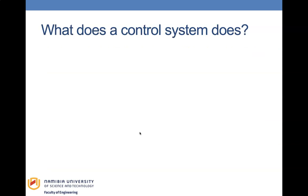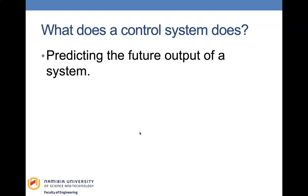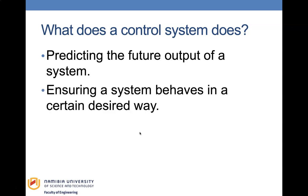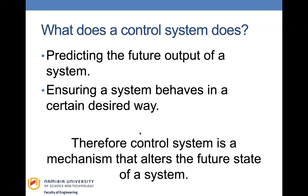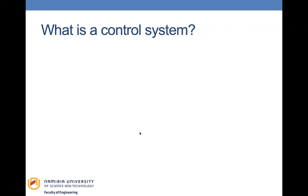So what does a control system do? It predicts the future output of a system and ensures a system behaves in a certain desired way. Therefore, a control system is a mechanism that alters the future state of a system — it predicts the future states and alters them to ensure that the desired output is what you get.